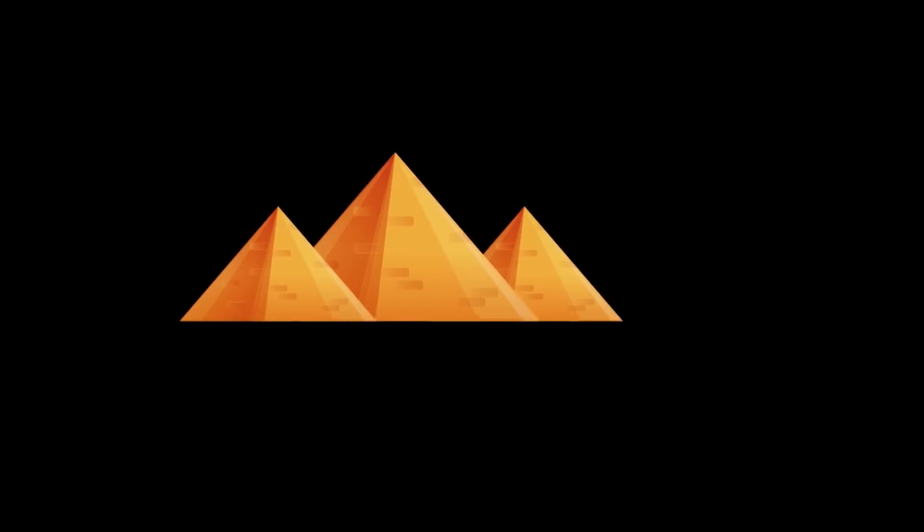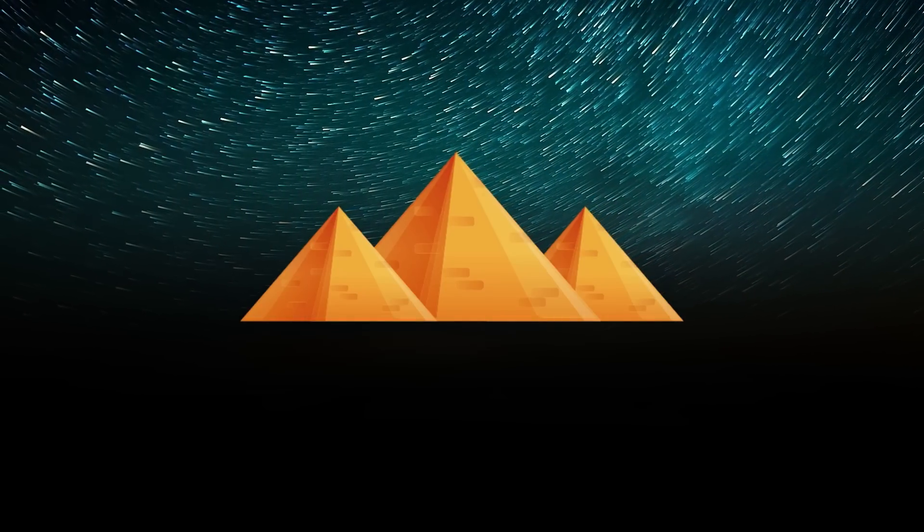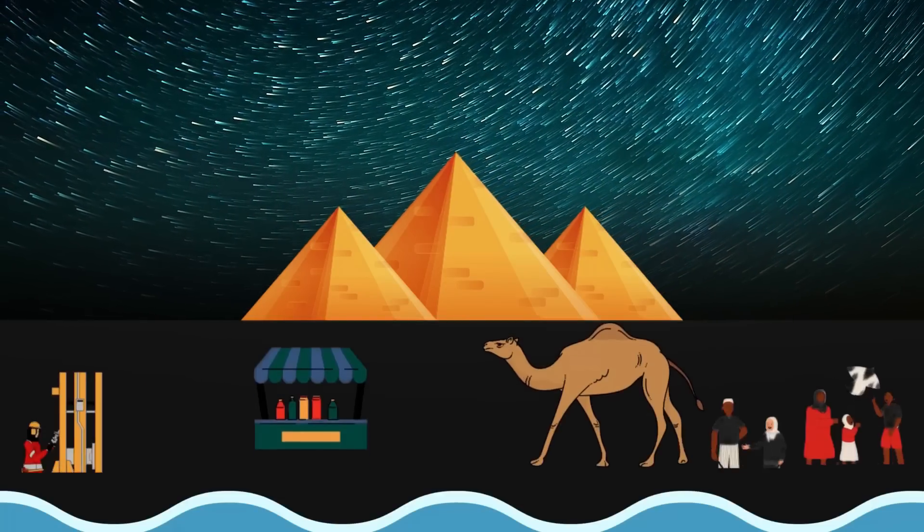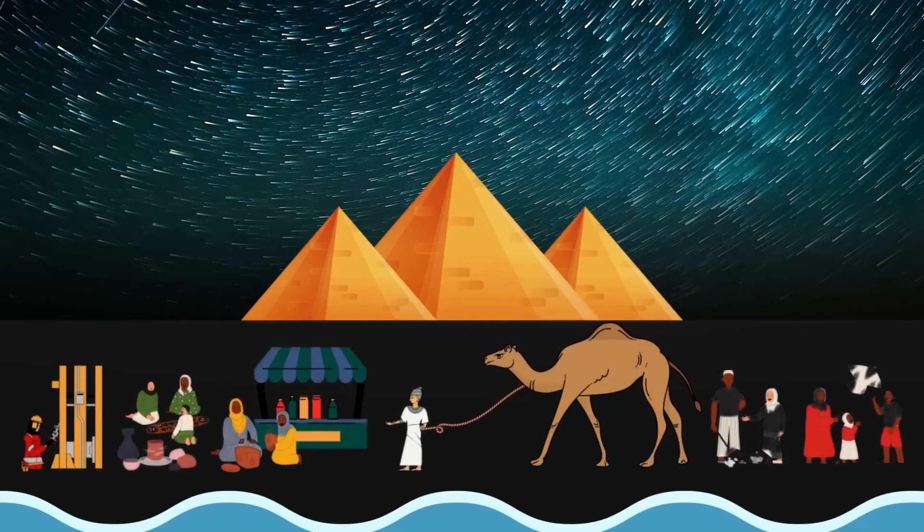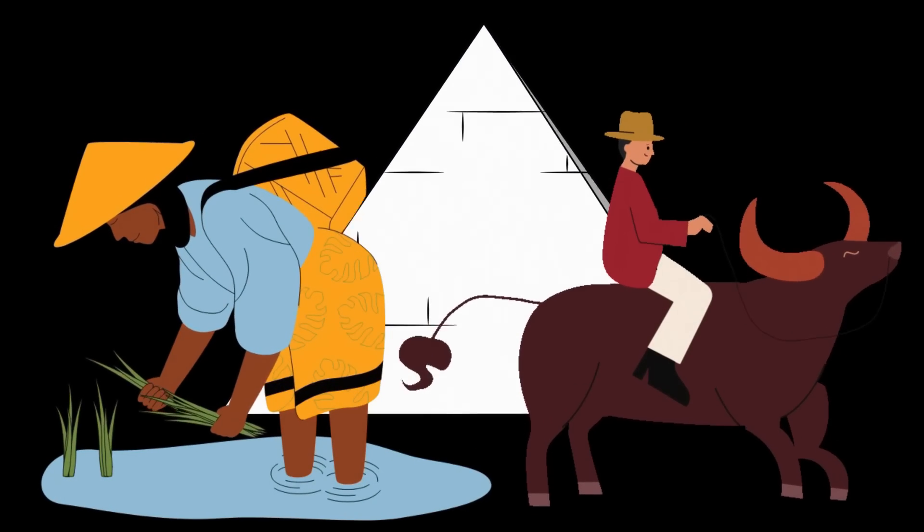By the year 600 BCE, the pyramids of Giza had already stood for over 2,000 years, silently witnessing the rise of human civilization growing in rapid and diverse ways.